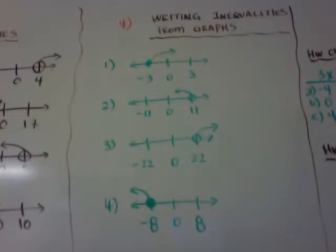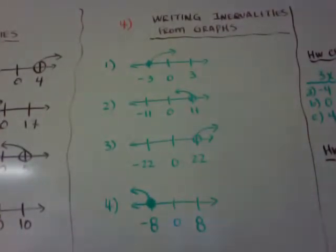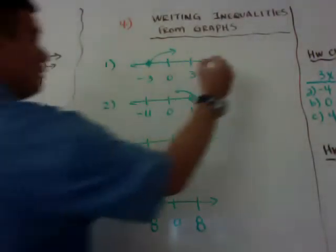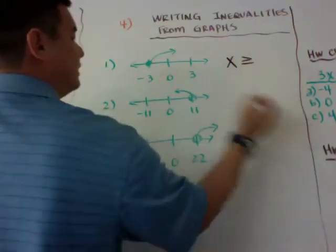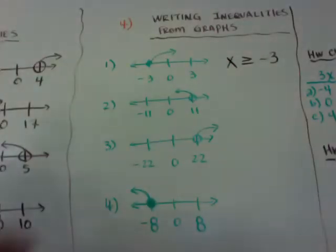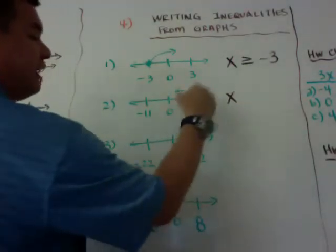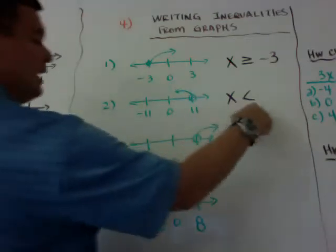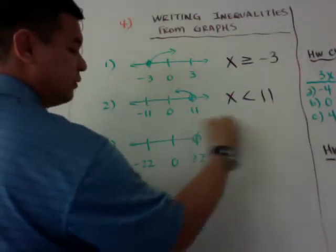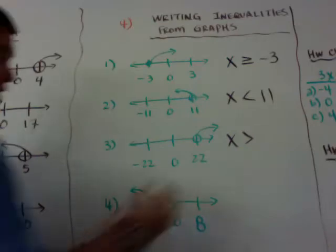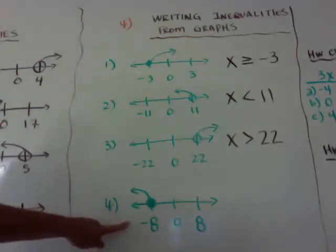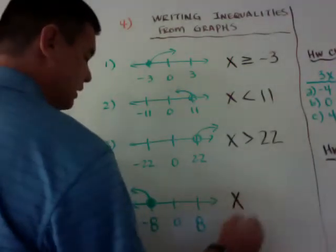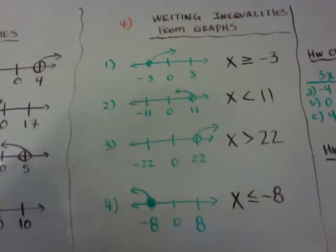Number four — writing an inequality from the graph, going backwards. Here I have four graphs and we write the inequalities. I'll use x as my variable. Always write the variable first. The first graph goes to the right and it's closed, so it's x is greater than or equal to negative 3. The next one goes left and open, so it's x is less than the given value. The one going right and open has no underline, so it's x is greater than 22. And the last one — you can figure it out — it's less than or equal to negative 3. Good job!